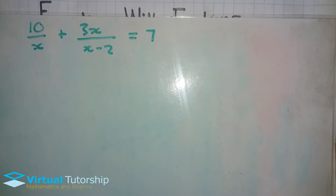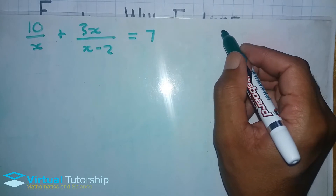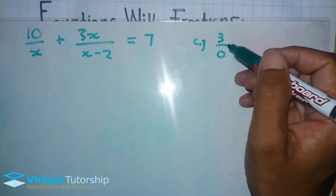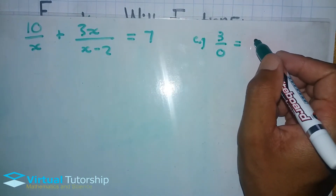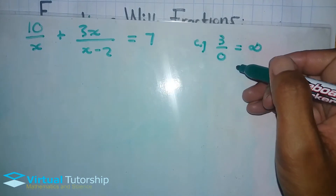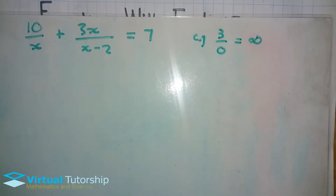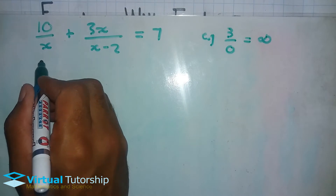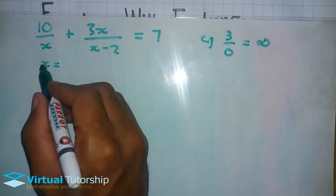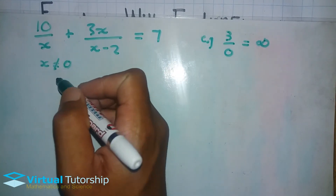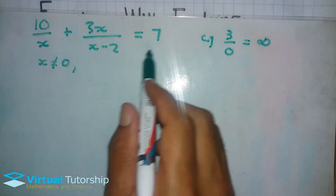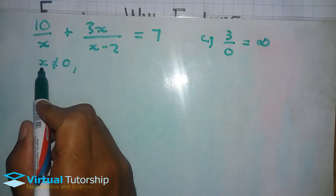Before we solve, let's discuss a situation where we have something like 3 divided by 0. This operation is undefined — you cannot divide a number by 0. So wherever you have a denominator, you have to state that the variable must not make that denominator equal to 0.